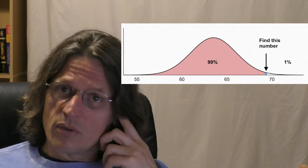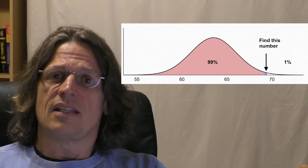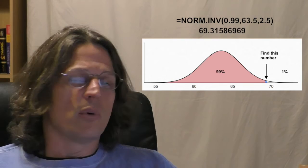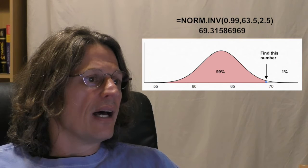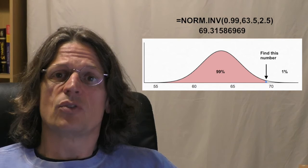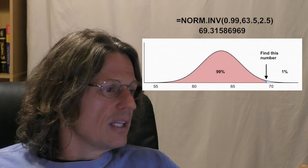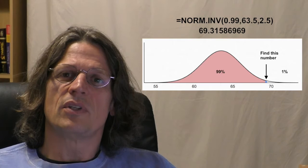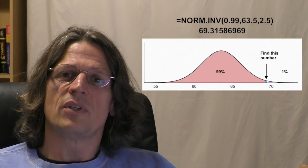Now let you do it for females — what is the cutoff for the top 1% largest height of females? Use the NORM.INV function and calculate that. The formula is: NORM.INV(0.99, 63.5, 2.5). For women it's 69.315 — so 69 inches, which is 5'9". A woman who is over 5'9" is taller than 99% of women in the United States, or only 1% of women are taller than she is.